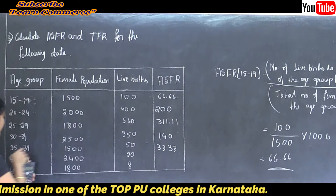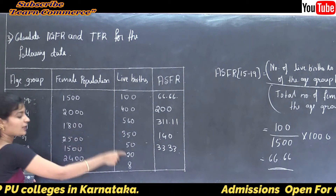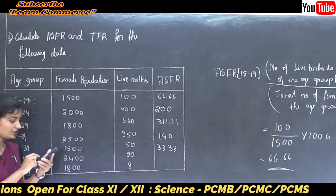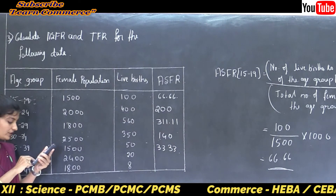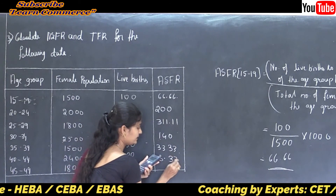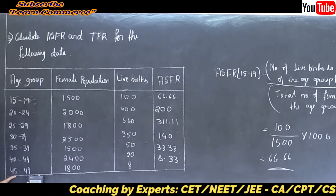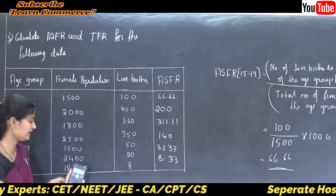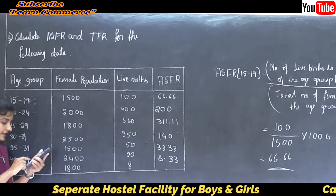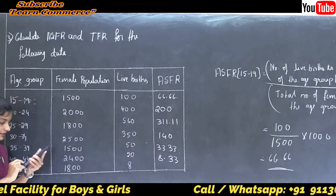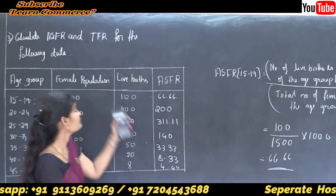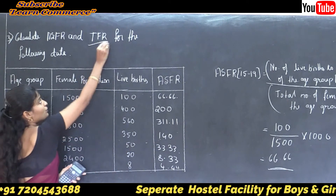For age group 40 to 44, live births are 20 divided by female population 2400 into 1000, that is 8.33. For age group 45 to 49, live births are 8 divided by female population 1800 into 1000, that is 4.44. Next, based on our question, we need to calculate total fertility rate.